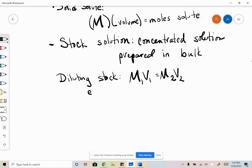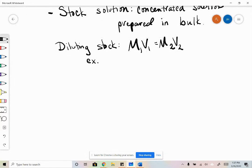So for example, let's start at the very beginning. Let's say we wanted to make 2 liters of 3 molar NaOH stock.